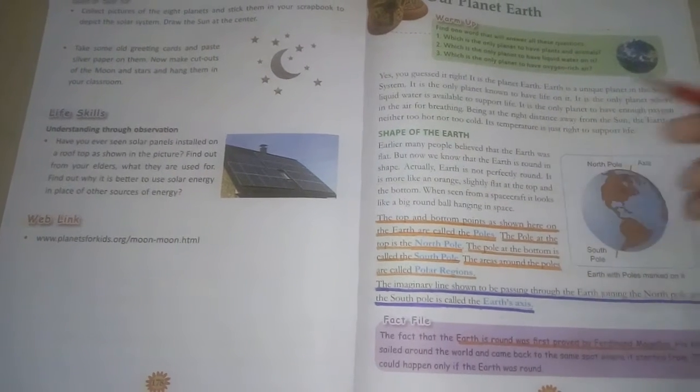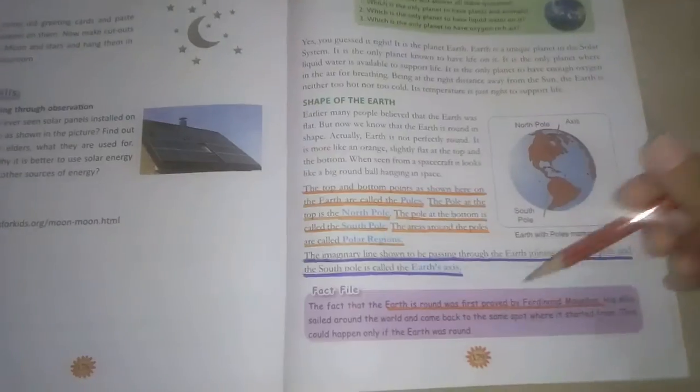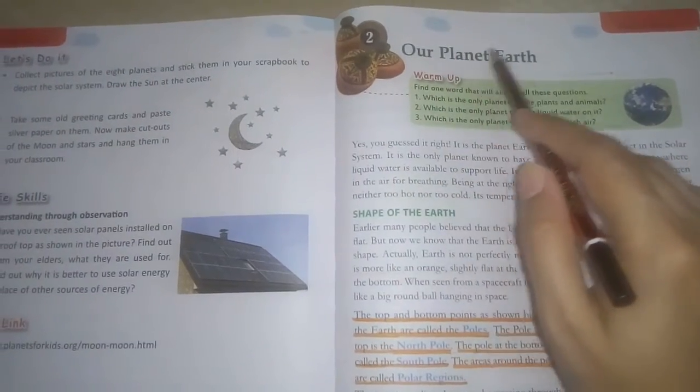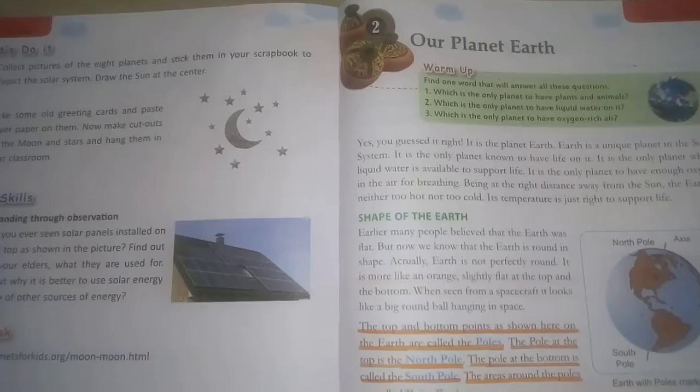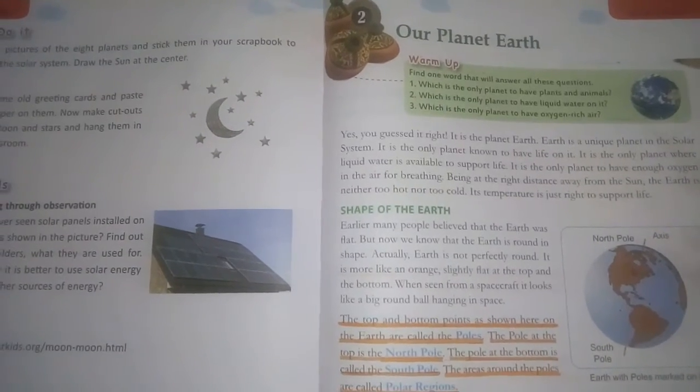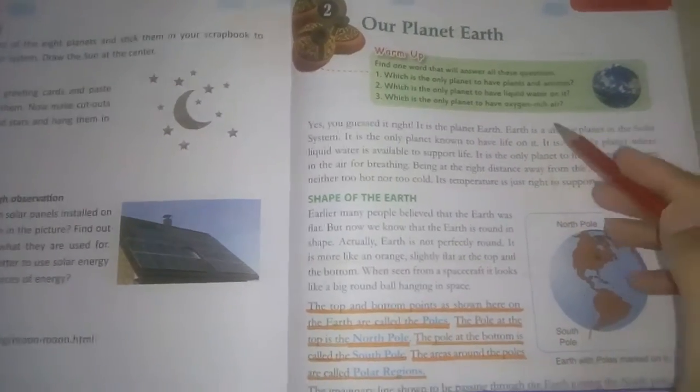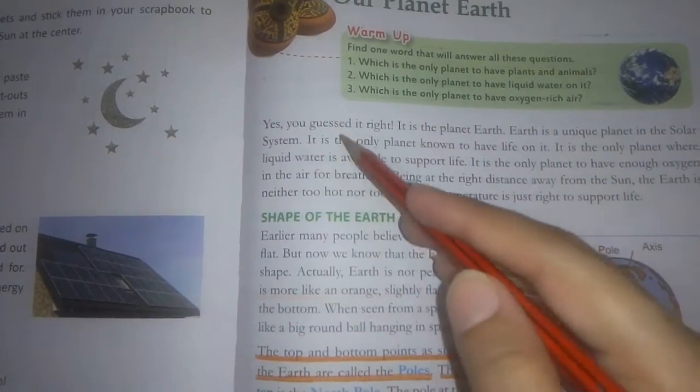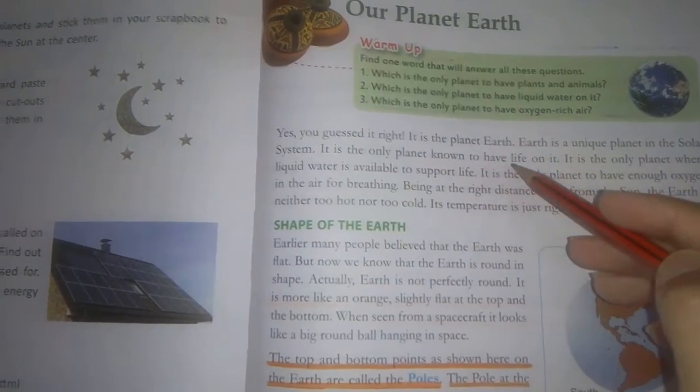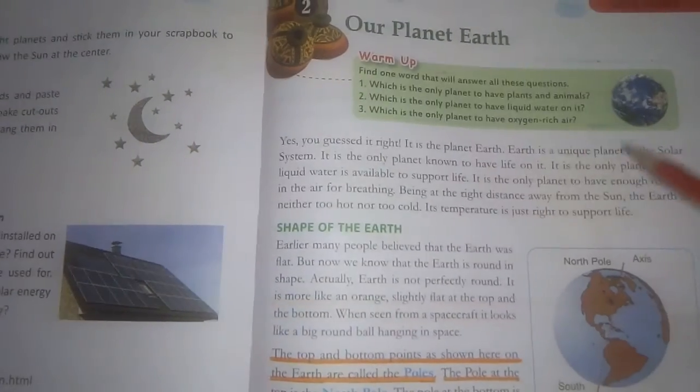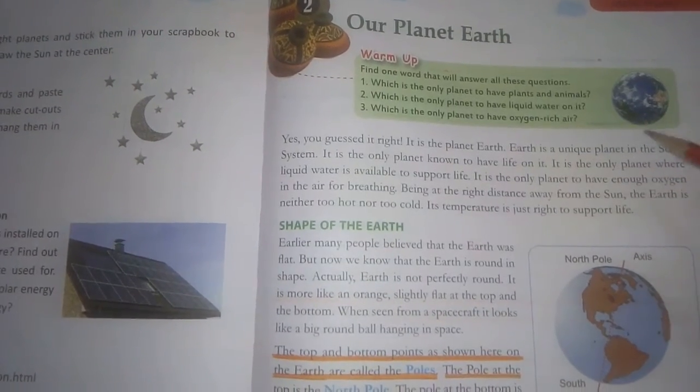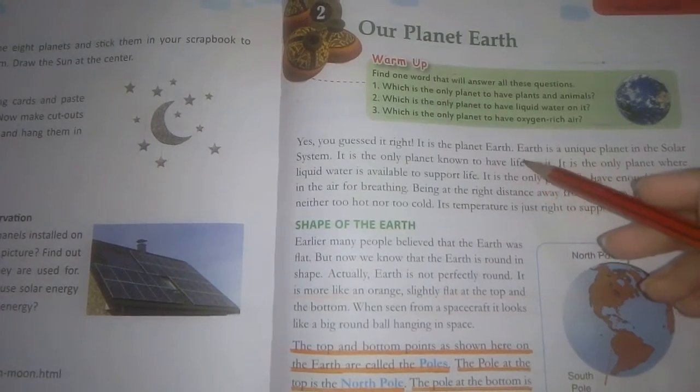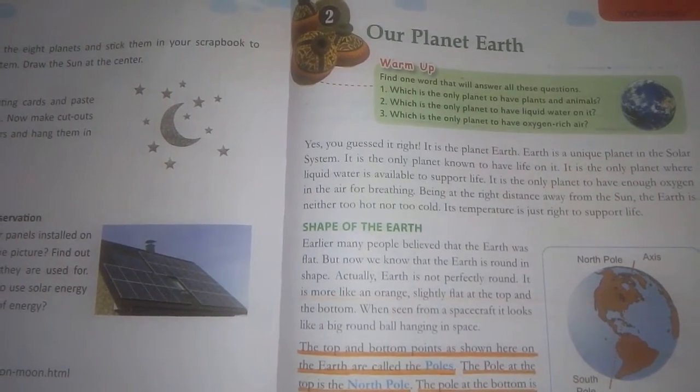Let's get started. Page number 179, Chapter number 2nd, Our planet earth. So, what is earth? Obviously, it is our planet. Earth is our unique planet in the solar system. It is the only planet known to have life on it.